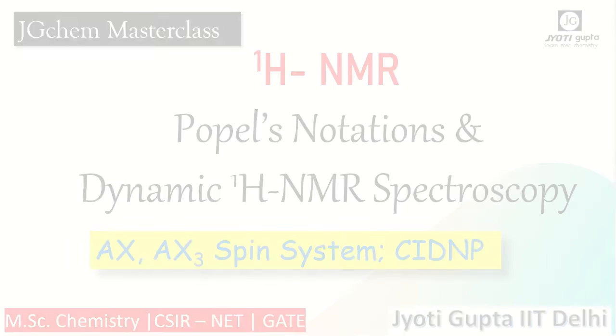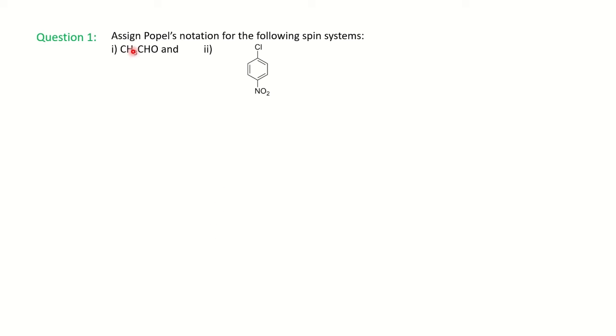We will start with the first problem. This is a problem given: assign Popel's notation for the following spin systems. You have two examples - one is acetaldehyde, other is parachloronitrobenzene. If you have already studied about coupling constant, chemical shift value, proton NMR basic concepts, you can go ahead with this video. Otherwise, you can first revise your concept related to first order, second order and Pascal's triangle. I have already prepared the video, I will share the link in the description box.